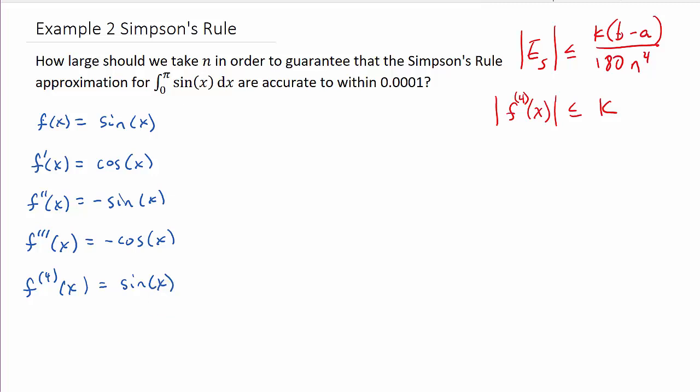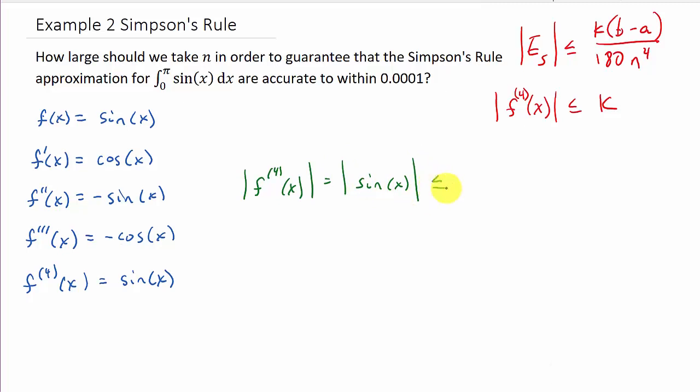Alright, so we've got the fourth derivative of f(x) equals sin(x). And this is less than or equal to what value. Now remember, x is between 0 and π. I mean, we can get a good idea of what this is by graphing it, but you should be able to get this without graphing. But let's go ahead and sketch the graph of sine. One, negative one.